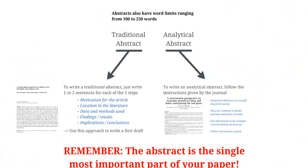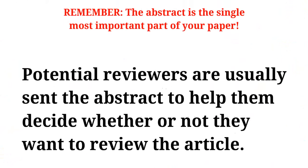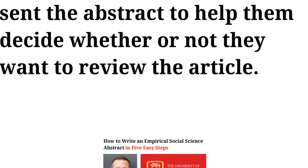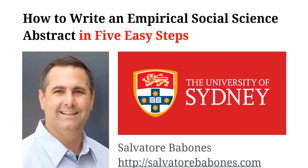Remember, the abstract is the single most important part of your paper. In fact, potential reviewers are usually sent nothing but the title and the abstract and then asked if they are willing to review your article. Especially if this is a first-time journal article for you, making sure it has a high quality title and abstract is really the key to getting people to review your article and take it seriously.